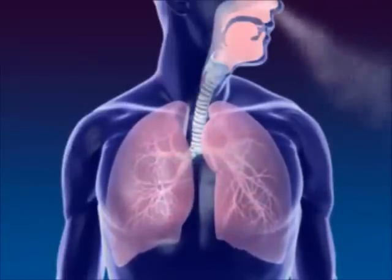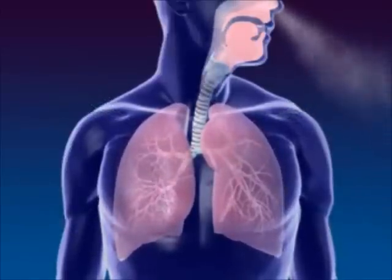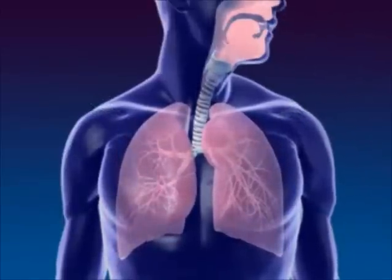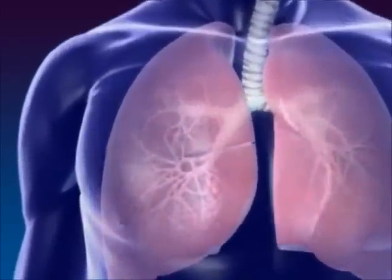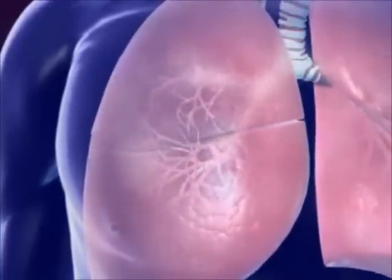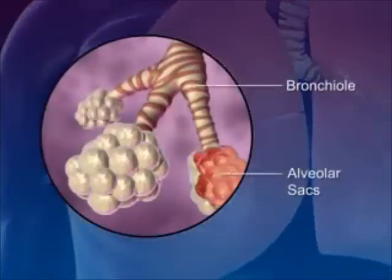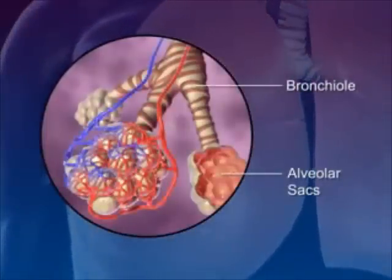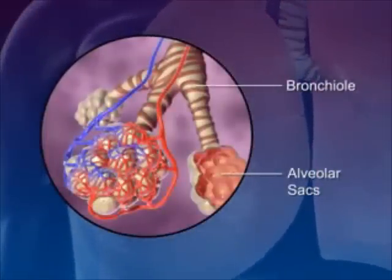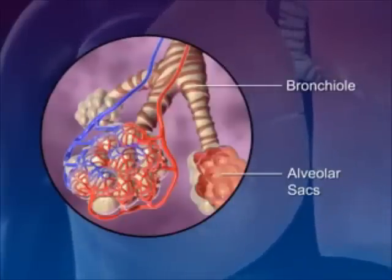Lungs are spongy tissue with alveoli and blood capillaries. Breathing occurs because of the expansion and contraction of the lungs. The bronchi carrying the air subdivide into smaller branches called bronchioles. At the end of each bronchiole are the alveolar sacs, which are surrounded by blood capillaries and contain millions of single-layer alveoli cells where gas exchange takes place.